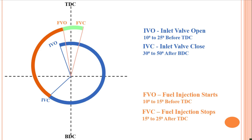The valve overlap provided for a diesel engine is 45 degrees, which is sufficiently larger compared to a petrol engine at 30 degrees. More valve opening is not advisable in a petrol engine because the air-fuel mixture may pass out with the exhaust gases, which is uneconomical. This issue does not arise in the diesel engine because only air is taken in during the suction stroke, and the power stroke will start.